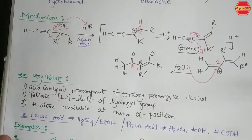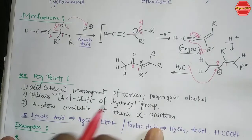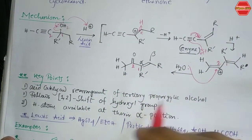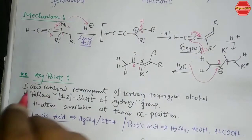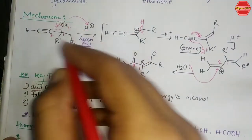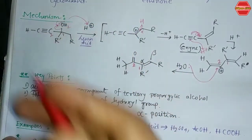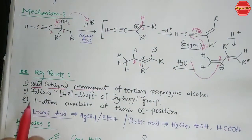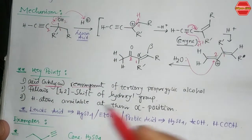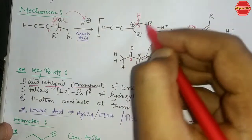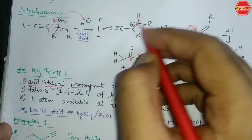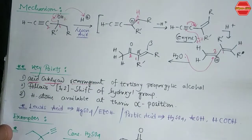Key points of the Rupe rearrangement: it is an acid-catalyzed rearrangement of tertiary propargylic alcohols in acidic conditions. It follows a 1,2-shift of the hydroxyl group — the OH shifts to carbon 2. The third key point: a hydrogen atom must be available at the alpha position. You need to check whether an alpha hydrogen is present; if it is, then the Rupe rearrangement is possible.